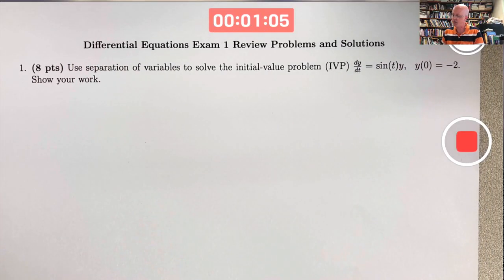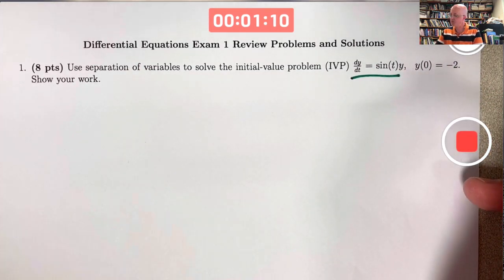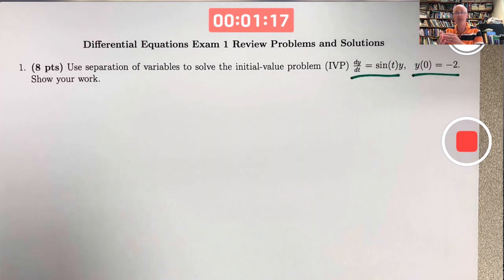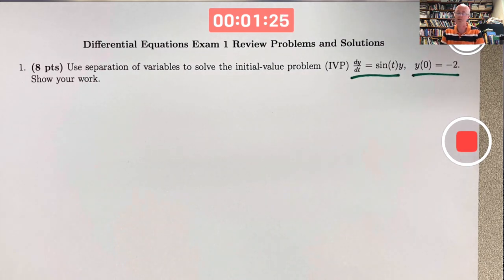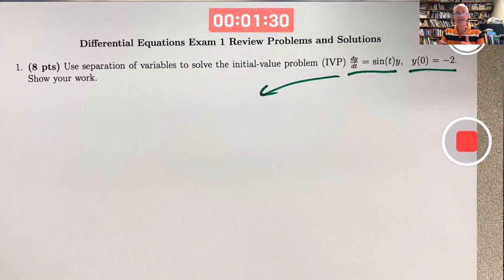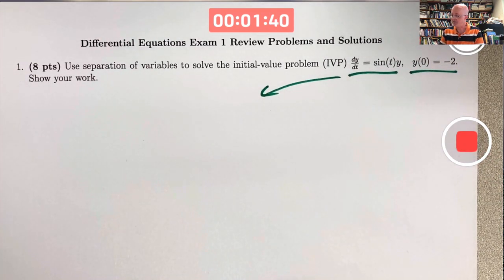Starting with the separation of variables problem: dy/dt equals sine of t times y, y(0) equals negative 2. The right-hand side function can be written as a product of a function of t alone times a function of y alone, which means this differential equation is separable. To separate variables, you try to get all the y's on one side and all the t's on the other. y is the dependent variable, t is the independent variable.